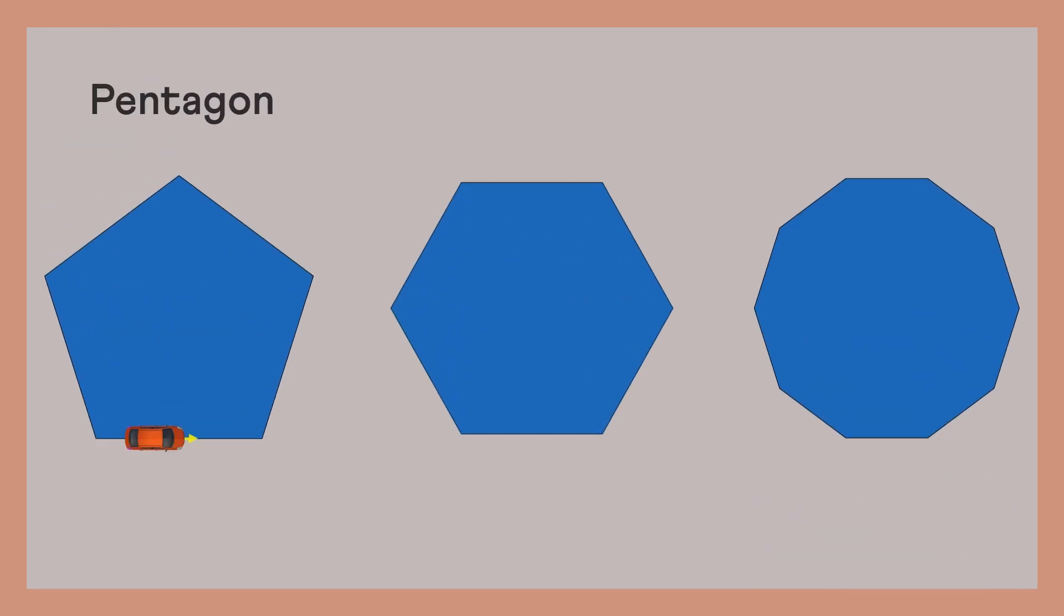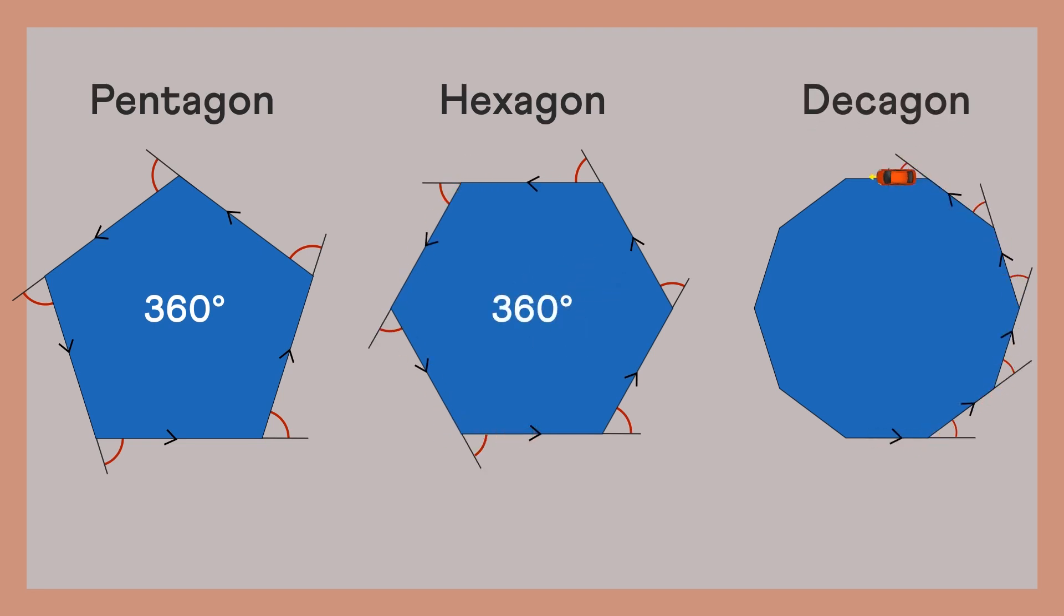A pentagon, 5 turns and we are back. So these 5 angles must add up to 360 degrees. Or this hexagon, 6 turns but the same sum. Same with this decagon. All the 10 exterior angles add up to 360 degrees.